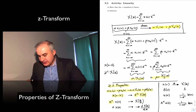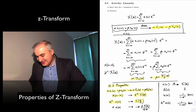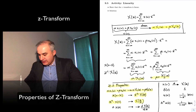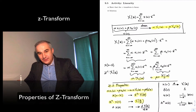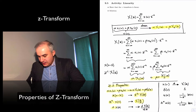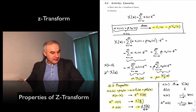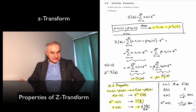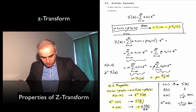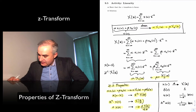Multiplication by an exponential in the time domain gives C divided by A in the transform domain — that is linear scaling — and you also get the derivative property.